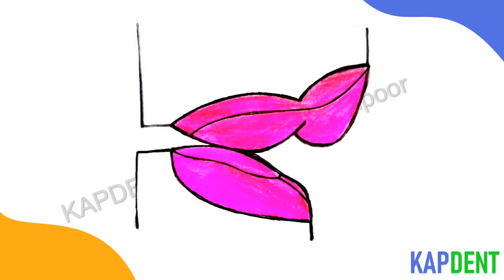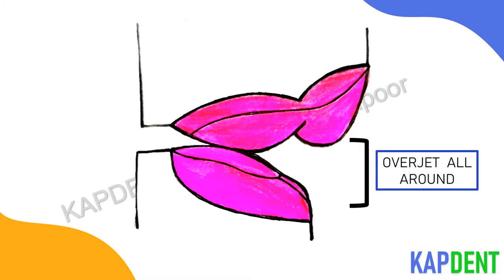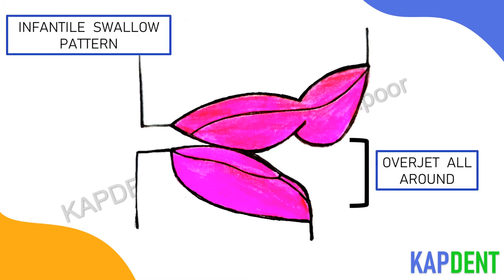Now let's look at the relationship between the upper and lower gum pads. The mandibular gum pad is everted in the anterior portion labially. Therefore at rest, both gum pads are separated by the tongue because of the infantile swallow pattern. The lower jaw is situated posteriorly with overjet all around, and the only contact seen is at the lateral sulcus.